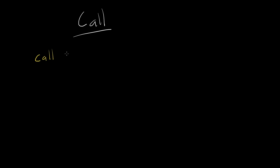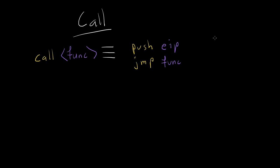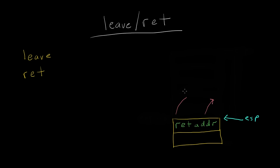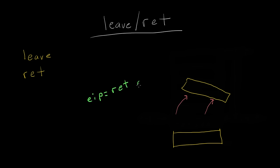The CALL instruction calls a function — whether it be a user-defined function or a PLT function such as printf or scanf. It is equivalent to PUSH EIP followed by JMP argument. In other words, it pushes the return address of the function being called onto the stack, then moves EIP to the first instruction of the function. The LEAVE instruction is called at the end of every function. It destroys the current stack frame by setting the stack pointer to the base pointer and popping the base pointer off the top of the stack. The RET instruction always follows LEAVE. Since the base pointer has already been popped off the stack, the return address is now on top. The RET instruction pops the return address off the top of the stack and sets the instruction pointer to that address.